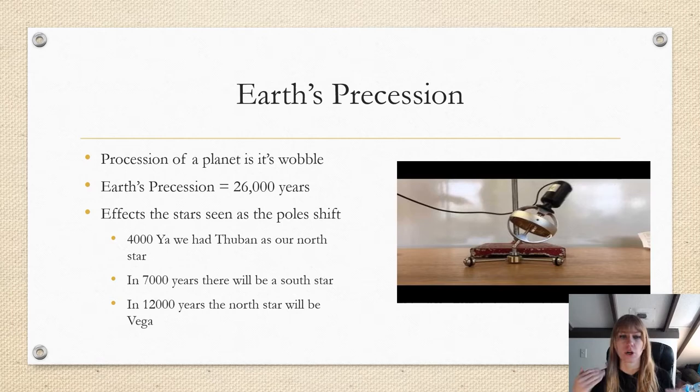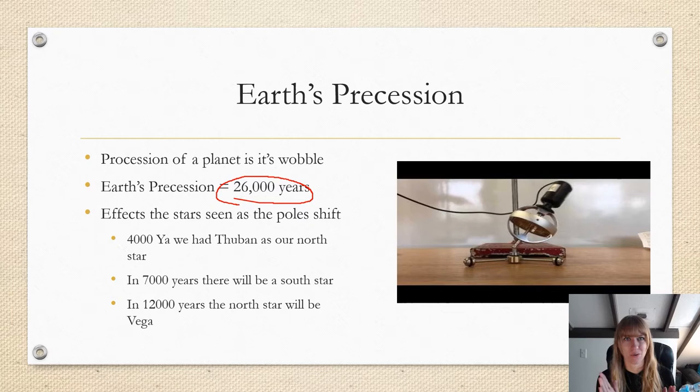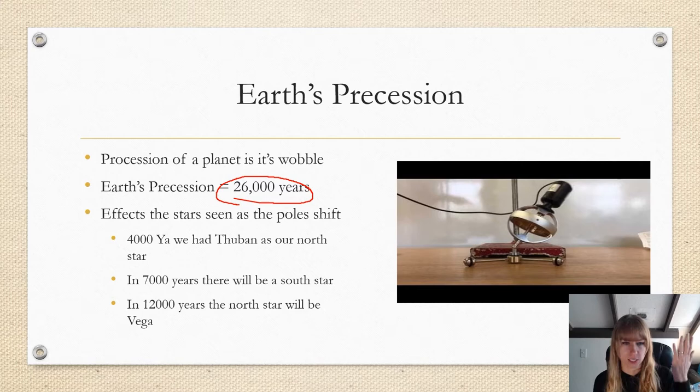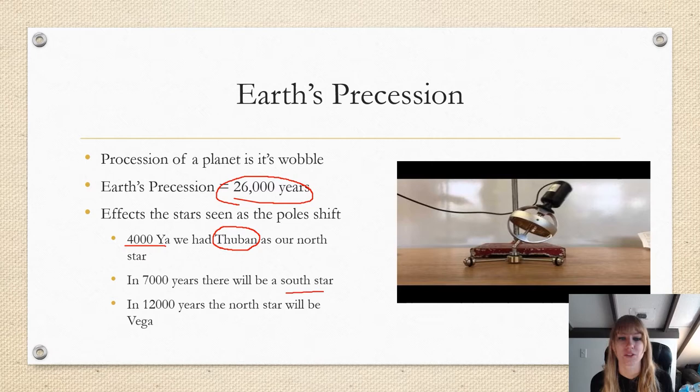Earth's precession, for example, is 26,000 years. That is a long time. The effects that we see take a long time to shift. You actually won't notice it as we are right now. If you were to live 26,000 years, you would notice it. This wobble actually affects the stars we see as the pole shifts back and forth. So let's see things that have changed. 4,000 years ago our north star was the star Thuban. In 7,000 years in our future there will be a south star but no north star.